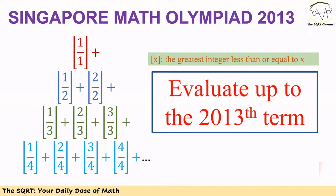Hello everyone. In this video we are going to talk about a very interesting problem from the Singapore Math Olympiad 2013. In this problem we are working with the floor function. Remember, floor of X for a real number X is the greatest integer less than or equal to X. In the expression we want to evaluate, we have multiple terms; each term includes some subterms. We want to evaluate this expression up to the 2013th term.